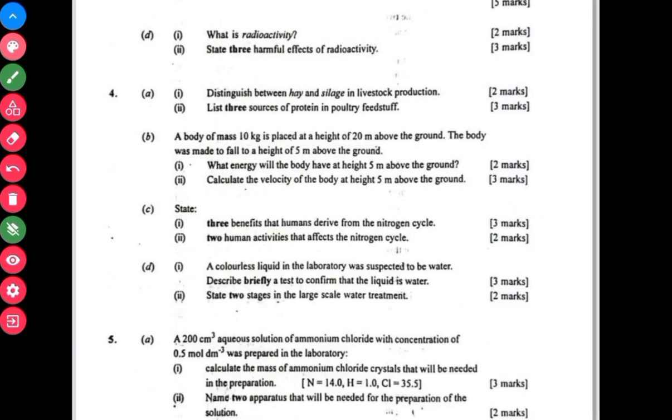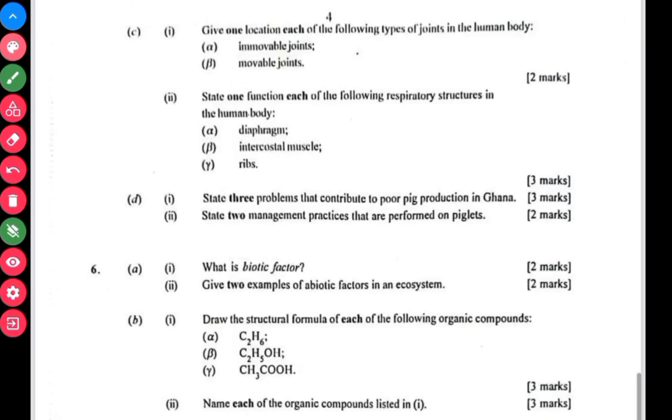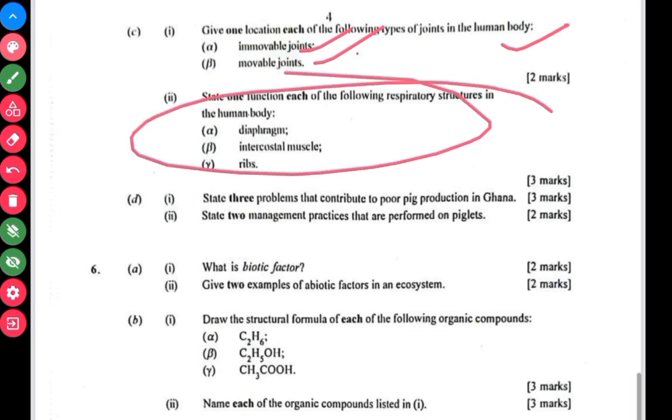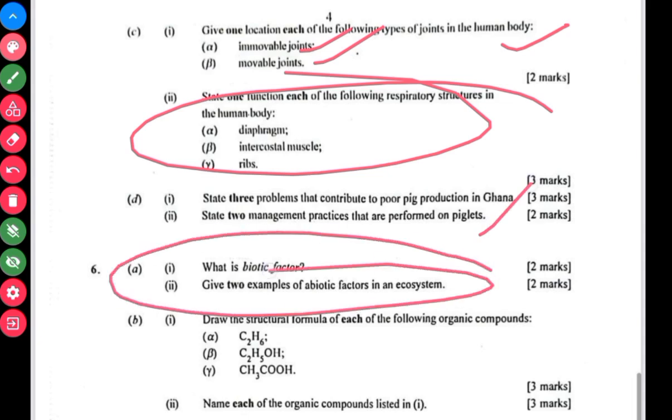Question 4b looks at motion. This is motion under gravity. Question 3c is looking at biology, that's anatomy physiology, movable and immovable joints. Then question 3c is looking at the respiratory system.